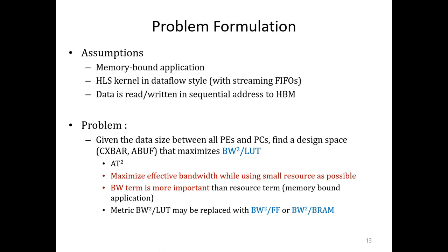We solve the problem of, given the data transfer size between all PEs and PCs, find the design space of custom crossbar stages and the AXI burst buffer size that maximizes the bandwidth squared over ALUT. This metric is inspired by the traditional area delay square product and tries to maximize the effective bandwidth while using as small resources as possible. We have the square term on the bandwidth because we think that the effective bandwidth is more important than the resource consumption for memory bound applications.